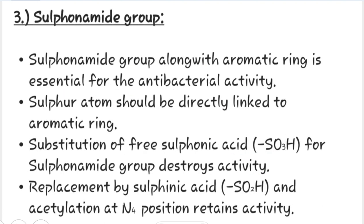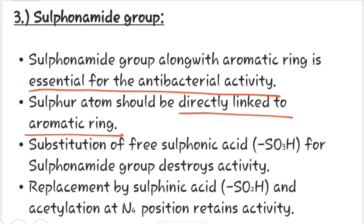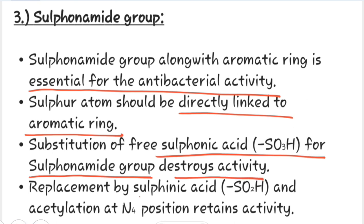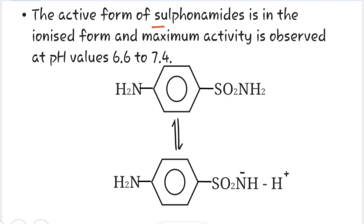The sulfonamide group along with the aromatic ring is essential for antibacterial activity. The sulfonamide should be directly linked to the aromatic ring. Substitution of free sulfonic acid for the sulfonamide group destroys activity, but replacement by sulfonic acid and acylation at the N4 position retains activity. The active form of sulfonamide is in the ionized form, and maximum activity is observed at pH values of 6.6 to 7.4.